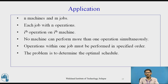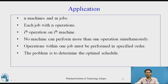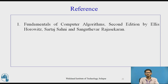An application of flow shop scheduling involves N machines where N jobs are to be processed: each job requires N operations, the ith operation is executed on machine i, no machine can perform more than one operation simultaneously, and operations within one job must be performed in a predefined order. The main aim is to determine the optimal schedule — one which takes the minimum amount of time. Thank you.